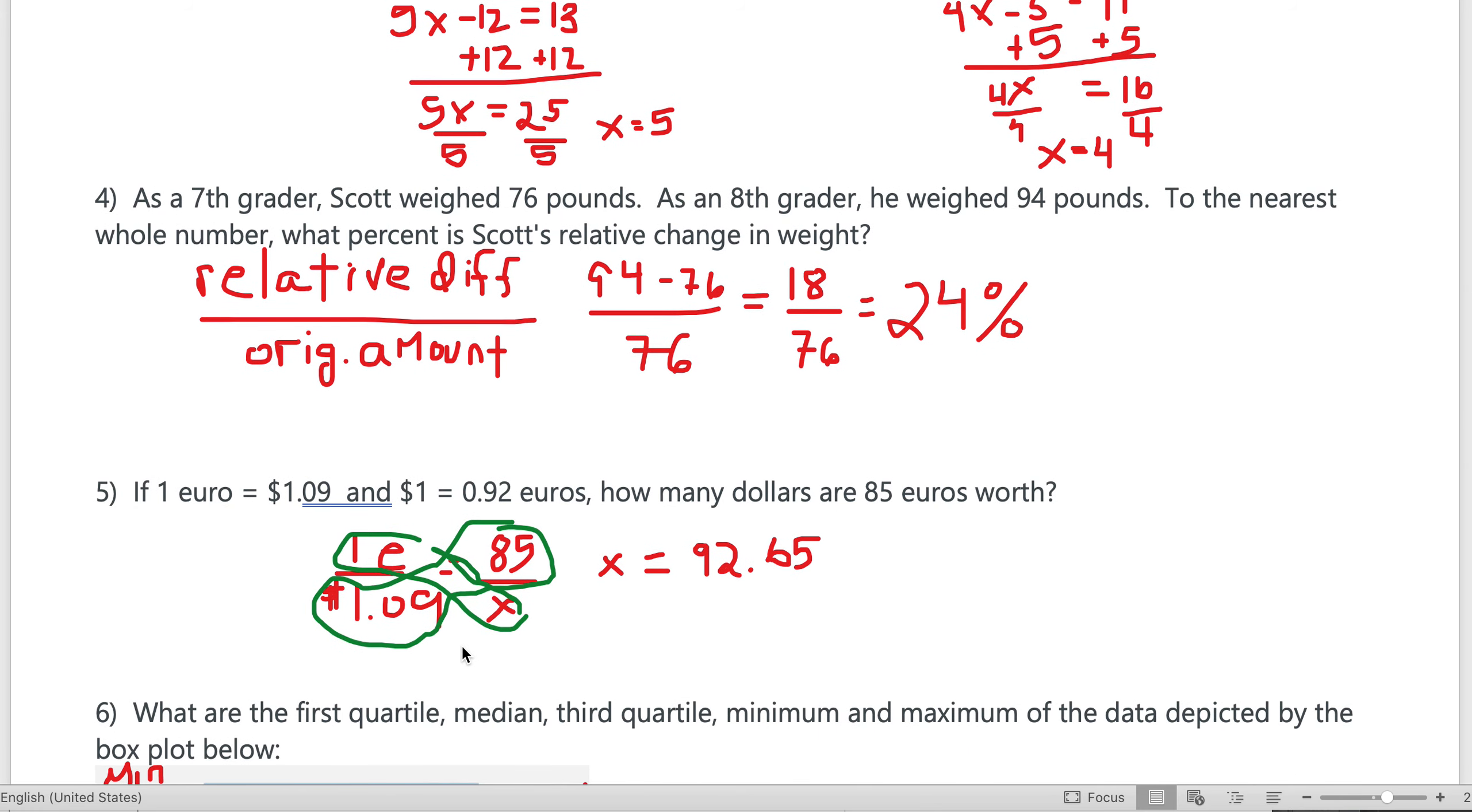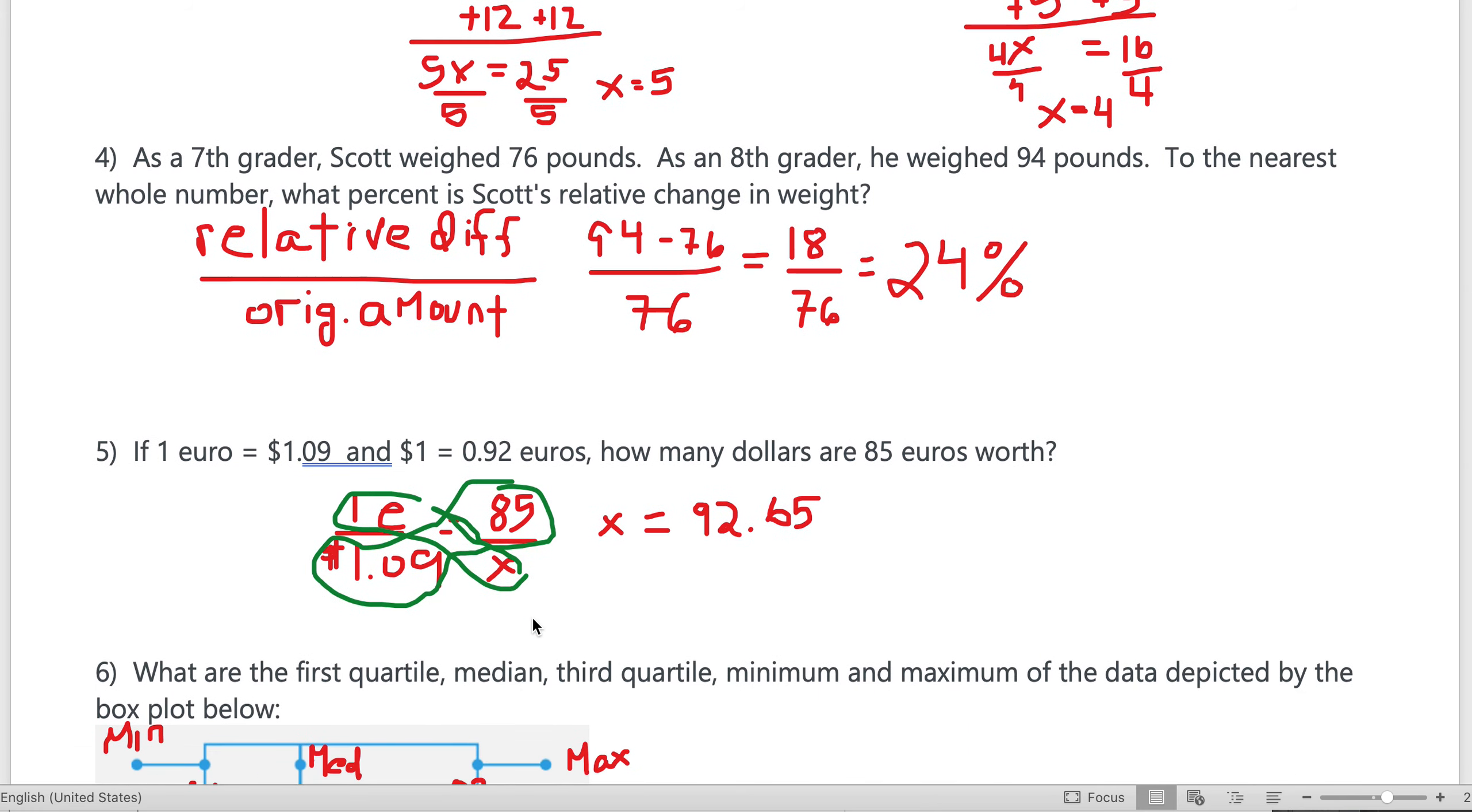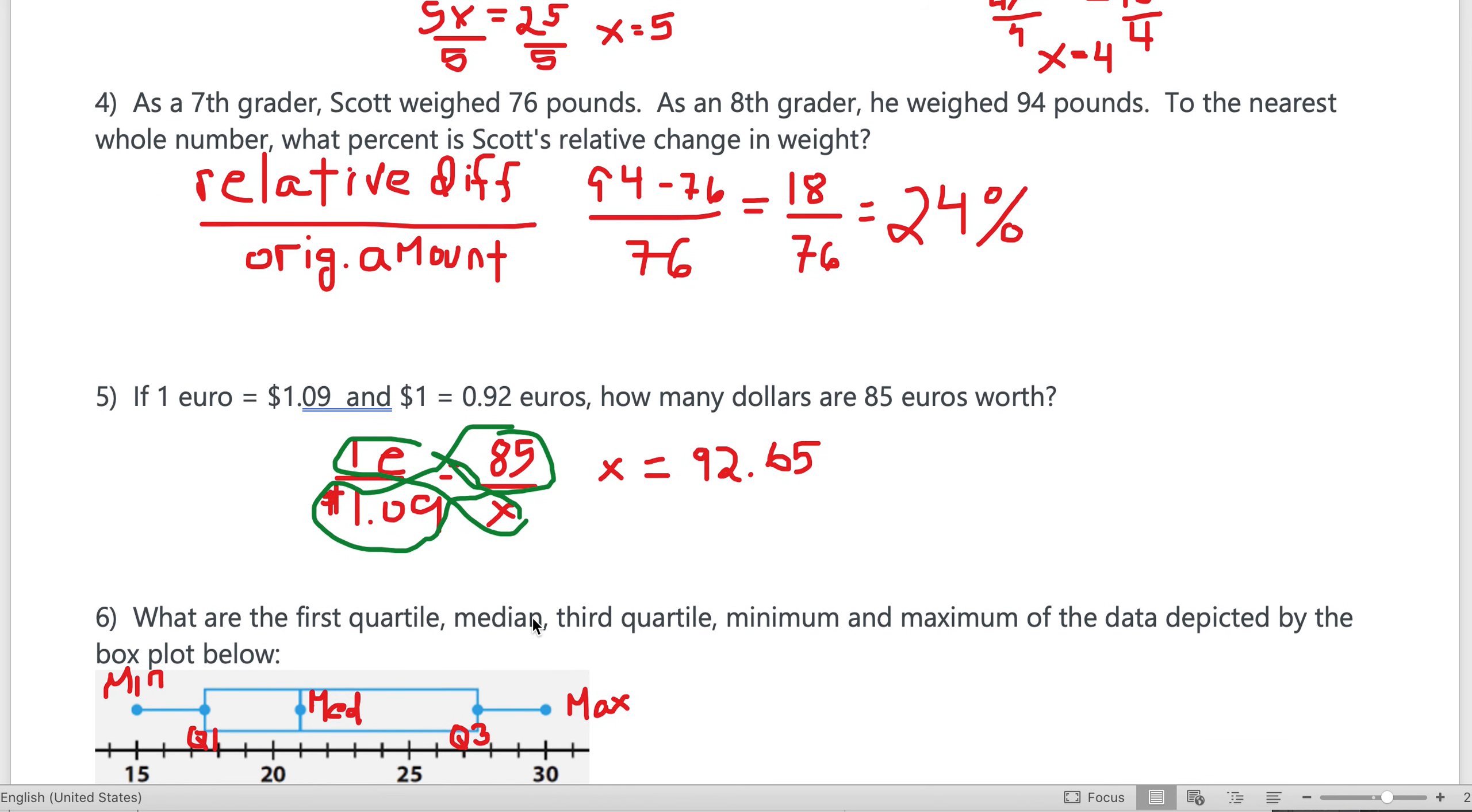Part over whole: 18 divided by 76 is 0.24 when rounded, which is 24 percent. On the last test, a lot of students got this right the old way I showed you. I wanted to show you a new way for this particular test.